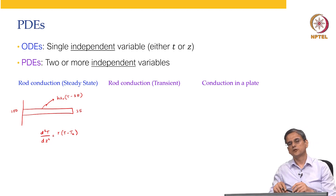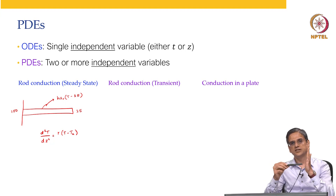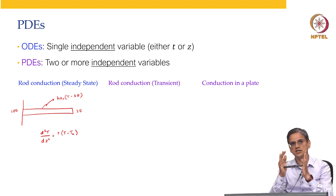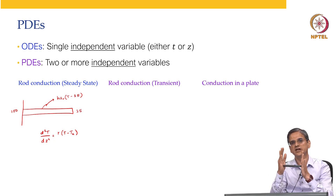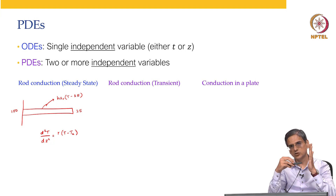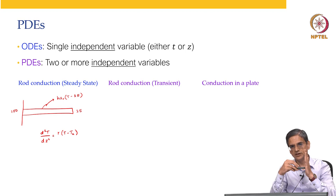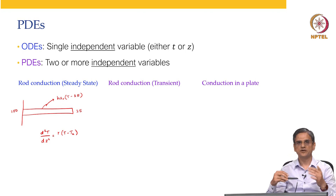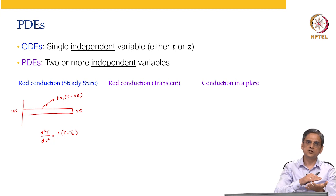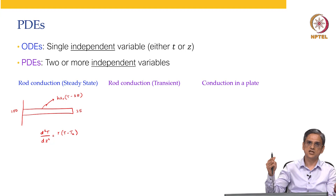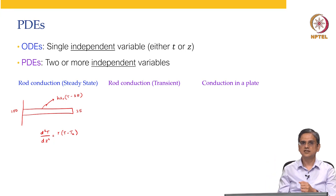Now let us consider the problem like this. We have this rod — one end is kept at 100 degrees Celsius, the other end is kept at 25 degrees Celsius. But initially, the entire rod was at 25 degrees Celsius — it was at room temperature — then it was brought closer to a source of heat. Let us say that source of heat is some kind of a heater, for example your computer gets heated and this is one of the fins in the cooling module of that computer. As the computer chip has heated to 100 degrees Celsius, the temperature of the rod starts increasing. Now, that is a transient problem.